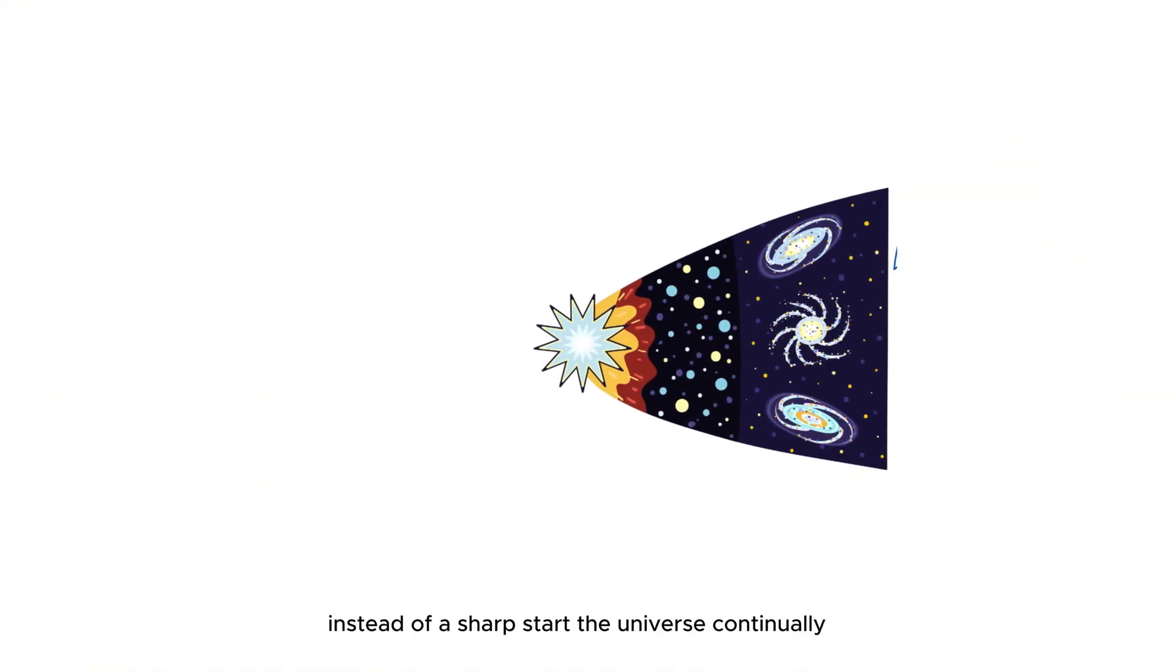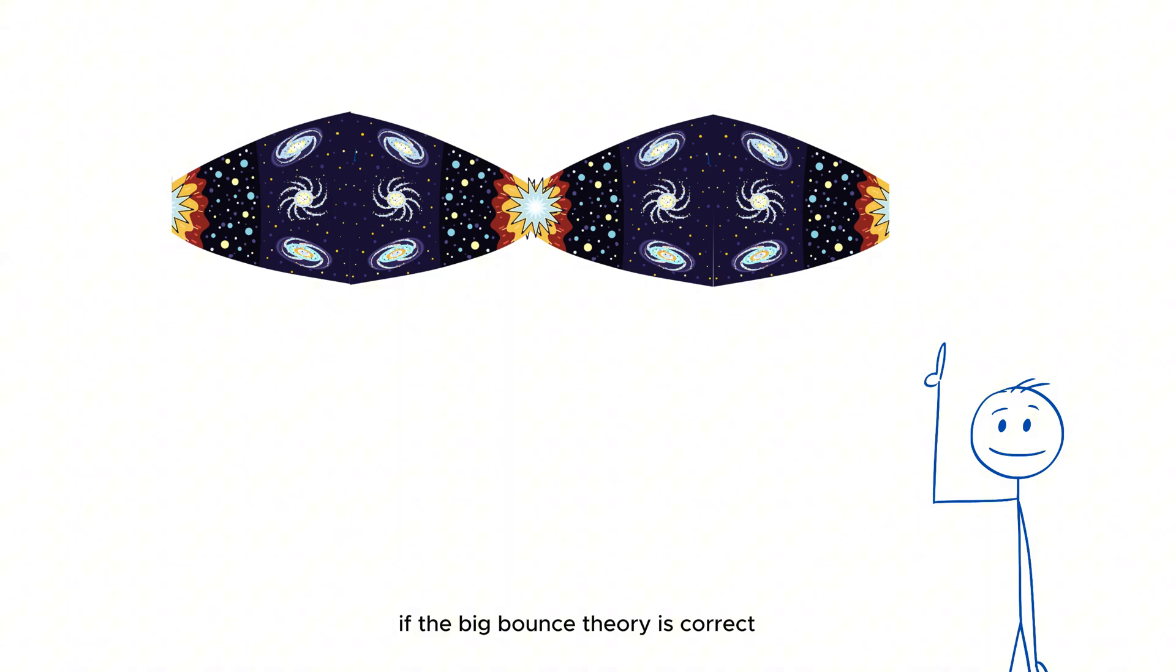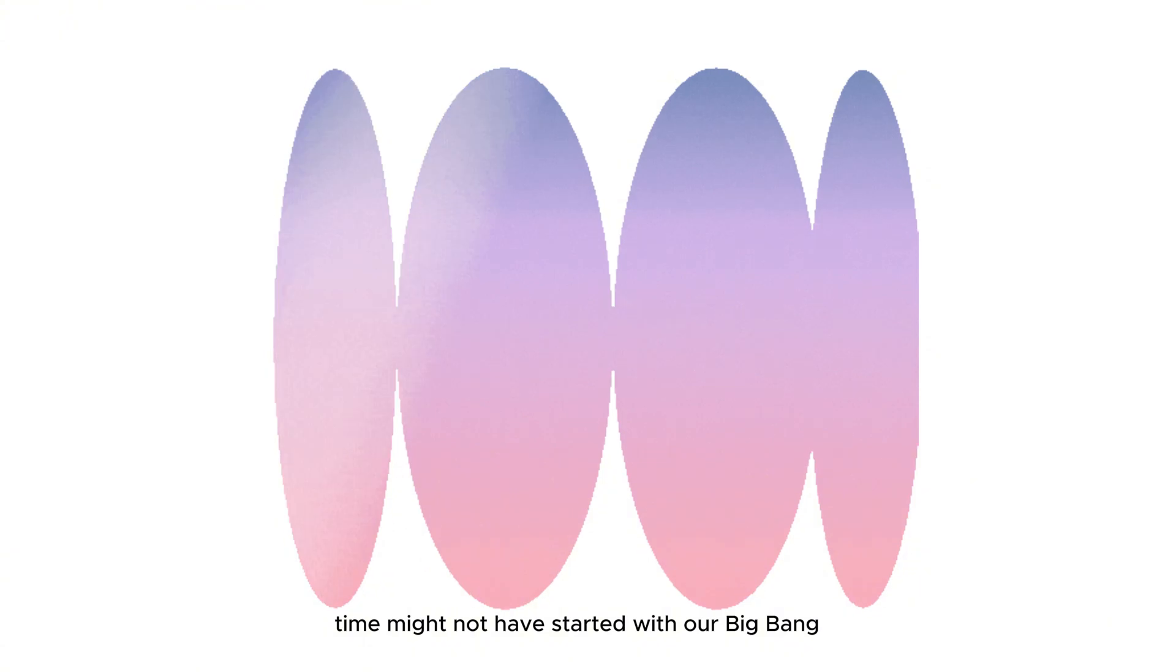Instead of a sharp start, the universe continually bounces between phases of expansion and contraction. If the Big Bounce theory is correct, time could stretch infinitely in both directions, with no ultimate beginning or end. Time might not have started with our Big Bang, but has always existed, moving through cycles of universes.